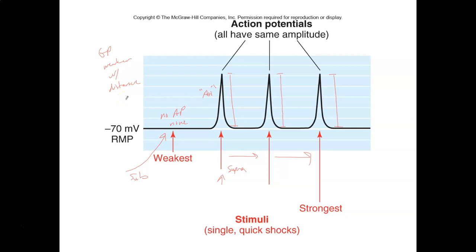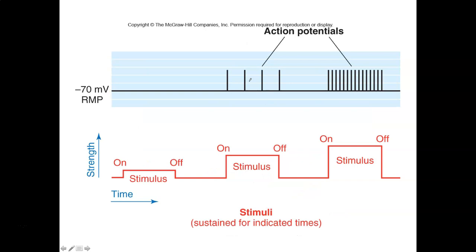If action potentials all relatively look the same, how do you interpret action potential signals? How would the brain code for intensity of a stimulus if stimuli are getting larger with strength and yet the action potentials look the same? Well, it turns out that we are not amplitude modulated. We rely on frequency modulation rather than amplitude modulation. The frequency of action potentials is going to determine the strength of the stimulus, not the amplitude.